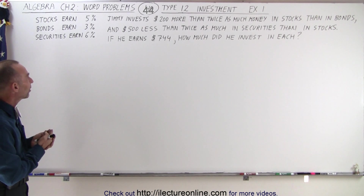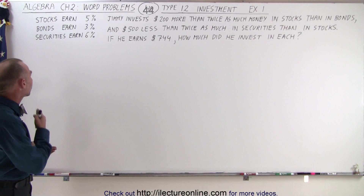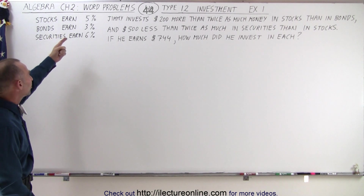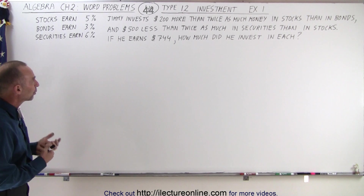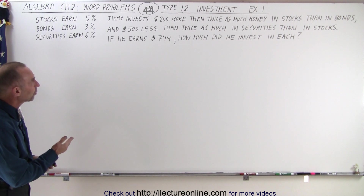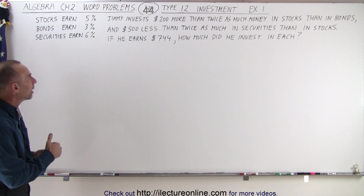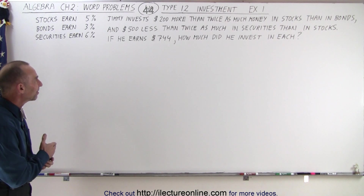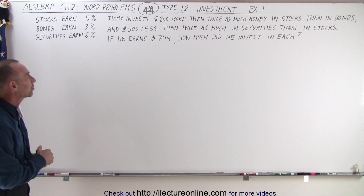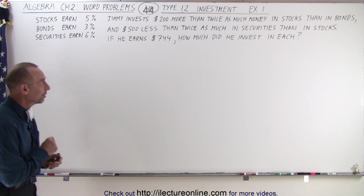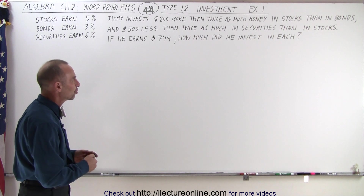Our first example has three different kinds of investments: stocks, bonds, and securities, which earn five percent, three percent, and six percent respectively. We're told that Jimmy invests two hundred dollars more than twice as much money in stocks than in bonds, and five hundred dollars less than twice as much in securities than in stocks. If he earns a total of seven hundred and forty-four dollars, how much did he invest in each?